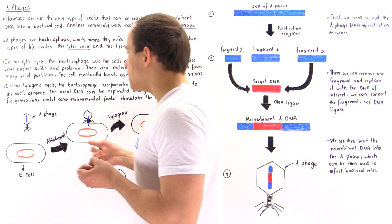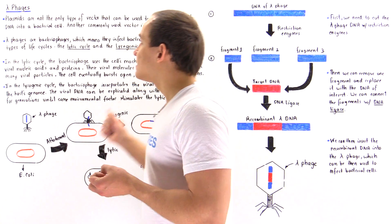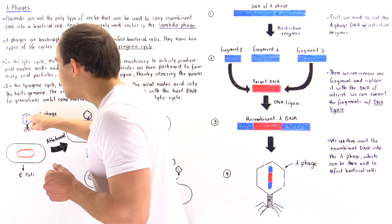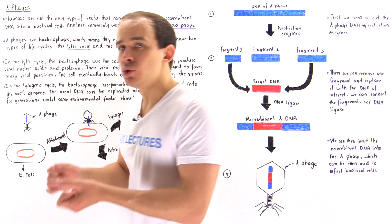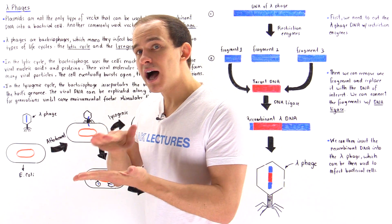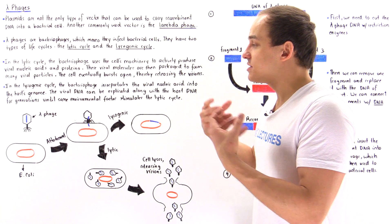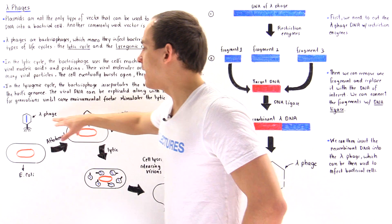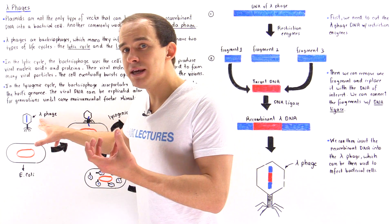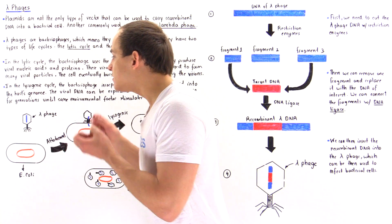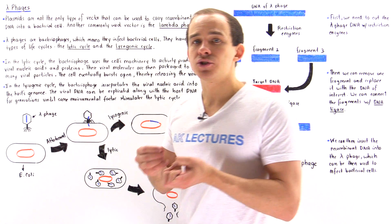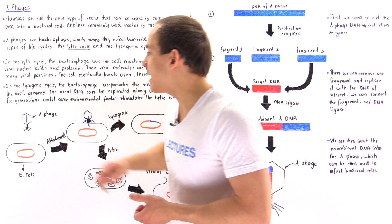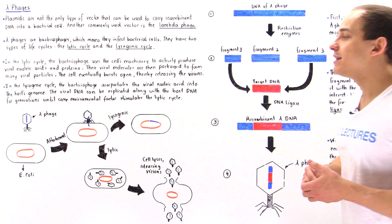How exactly can we use lambda phages as vectors? It turns out we can replace the lambda DNA molecule with a DNA molecule of our choice, as long as the size of the DNA molecule we're inserting is about the same as the size of the DNA molecule found in the lambda phage. This means the lambda phage does not need its own DNA to survive — we can put in any DNA as long as the size matches the original lambda DNA.